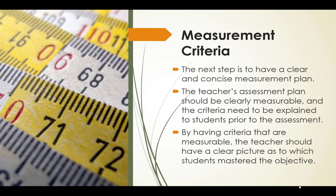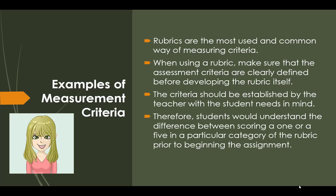The next step is to have a clear and concise measurement plan. The teacher's assessment plan should be clearly measurable, and the criteria need to be explained to students prior to the assessment. By having criteria that are measurable, the teacher should have a clear picture as to which students mastered the objective. Rubrics are the most common way of measuring criteria. When using a rubric, make sure that the assessment criteria are clearly defined before developing the rubric itself. The criteria should be established by the teacher with the student needs in mind, so students would understand the difference between scoring a 1 or a 5 in a particular category of the rubric prior to the beginning of the assignment.